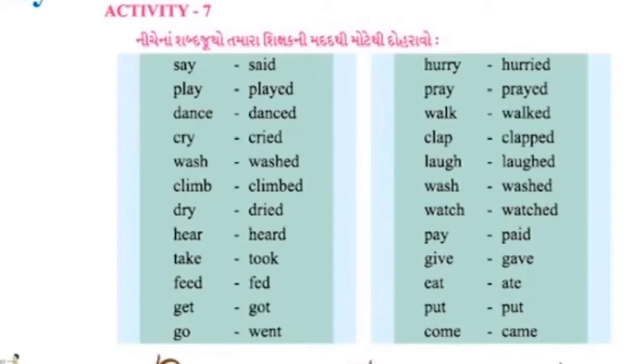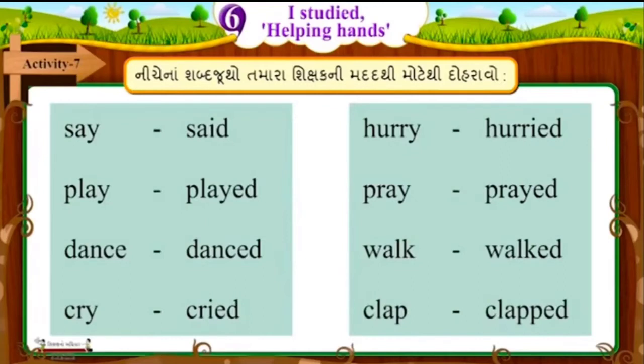Activity 7 — read the following word groups aloud with the help of your teacher. S-A-Y, SAY. S-A-I-D, SAID. Here the word given for the action of speaking is 'say,' meaning 'to say/speak.' Its past tense form is 'said,' meaning 'said' or 'spoke.'